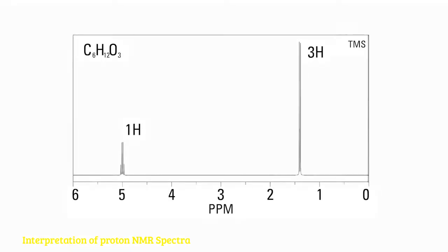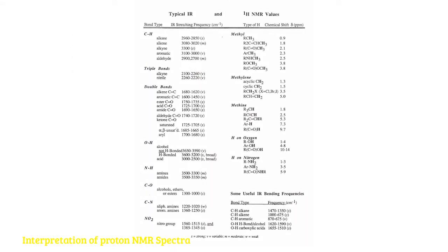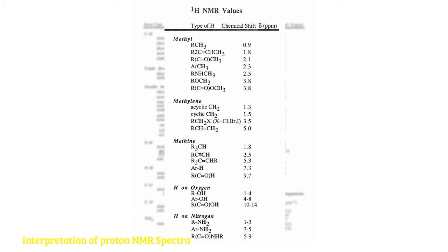First, you must be given the molecular formula so you know how many of each type of atom are present. Second, you will count the number of different signals and their relative integrations to see how many different sets of equivalent hydrogen atoms are in a molecule and how many of each set are present. Then, you will compare the chemical shifts of each signal to the table in your book or e-book to identify what functional groups are present.